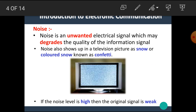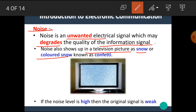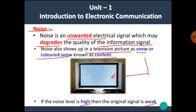In this video, we are going to see what is meant by noise. Noise is an unwanted electrical signal which may degrade the quality of the information signal or the original signal. Noise also shows up in a television picture as snow or colored snow, known as confetti. If the noise level is high, then the original signal is weak. Noise is an unwanted quantity, hence it should be removed.